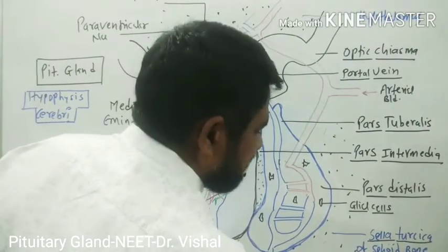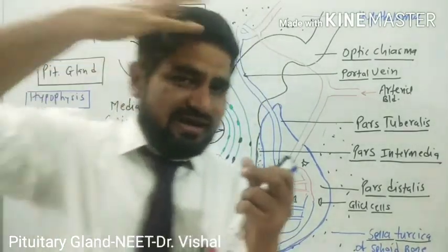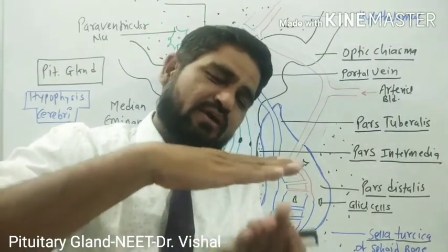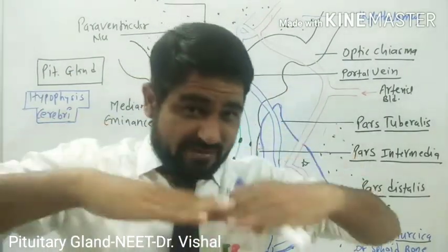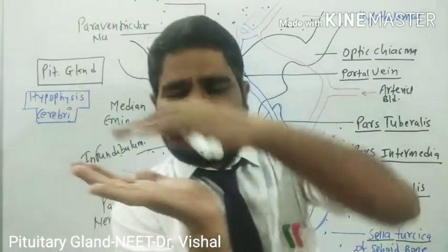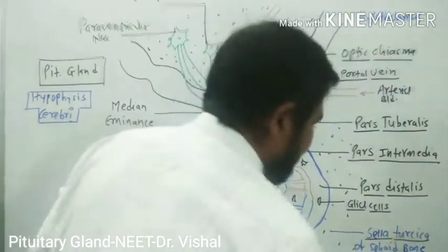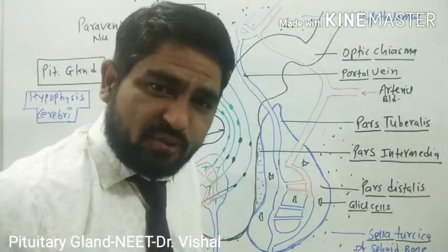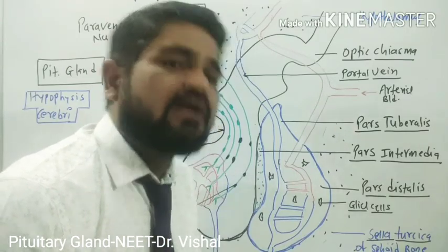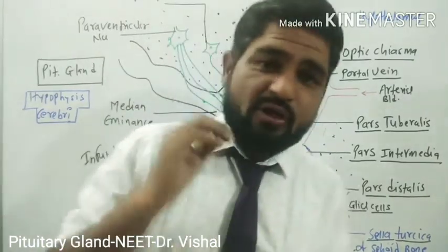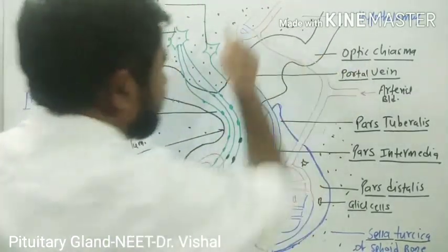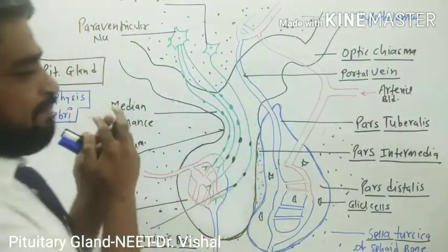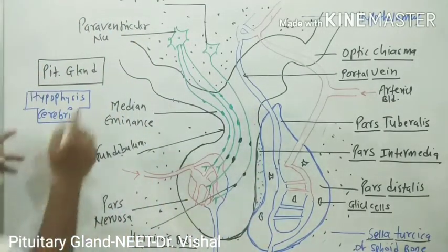The pituitary is located in the sella turcica of the sphenoid bone. The sphenoid bone forms the base of the cranium. The sella turcica is a saddle-shaped cavity at the base of the skull. The pituitary is also located behind the optic chiasma. It is one of the smallest glands of the body — located below the hypothalamus, behind the optic chiasma, in the sella turcica of the sphenoid bone.